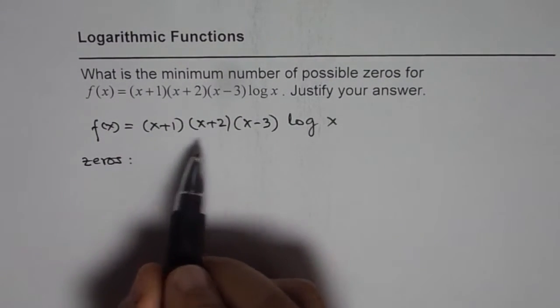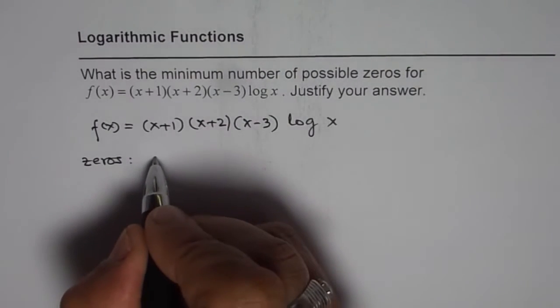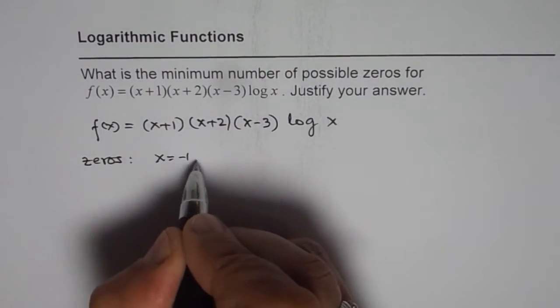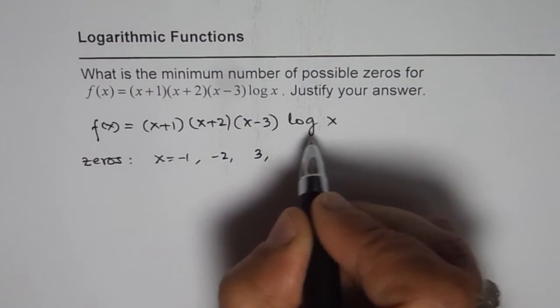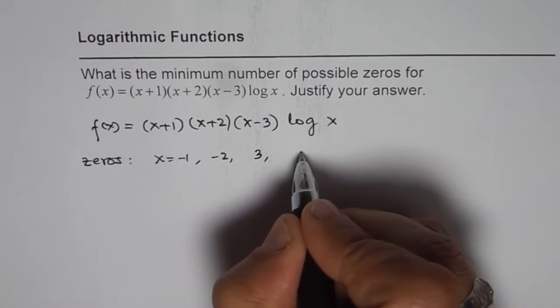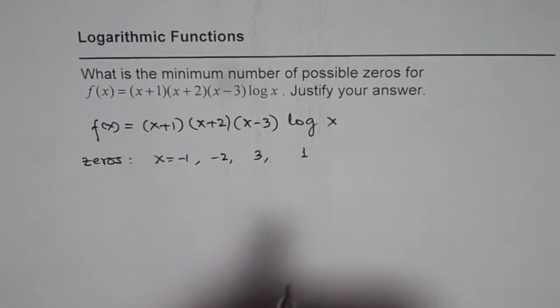As we can see directly from the equation, we have zero at x = -1, we have it at x = -2, at x = 3, and log x will be zero at x = 1. So these are possible zeros which you get from the equation itself.